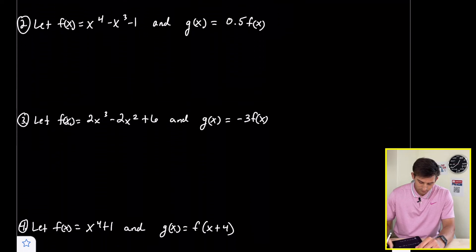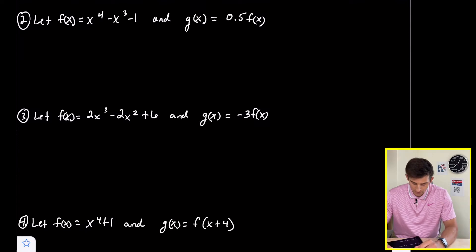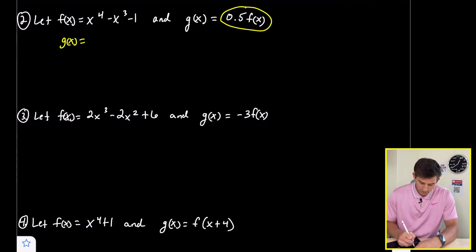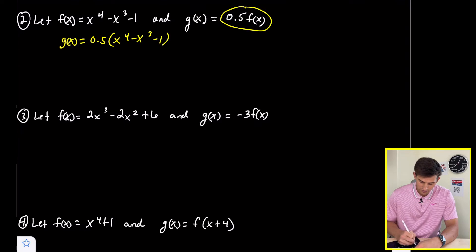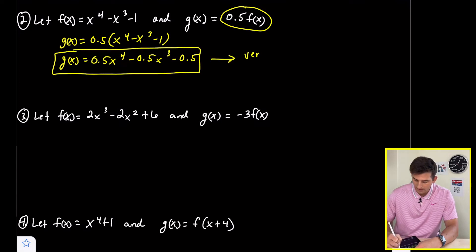Number two: let f of x equal x to the fourth minus x cubed minus one — same function — and g of x equals 0.5 times f of x. We have multiplication, so g of x equals 0.5 times f of x. Since f of x is x to the fourth minus x to the third minus one, we distribute 0.5 to get 0.5x to the fourth minus 0.5x cubed minus 0.5. That gives us a vertical shrink by a factor of one half.